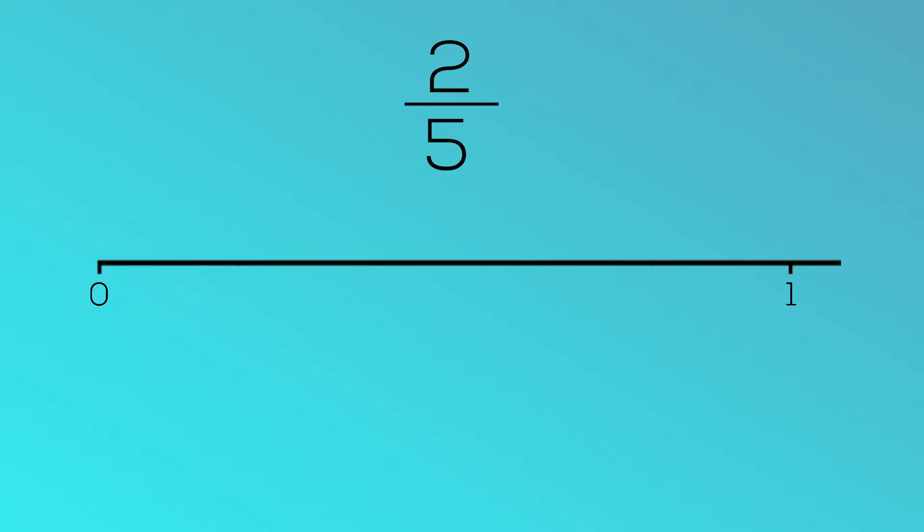The denominator is five, which tells us that the whole has been split into five equal parts. Let's divide the whole on our number line into five equal parts.